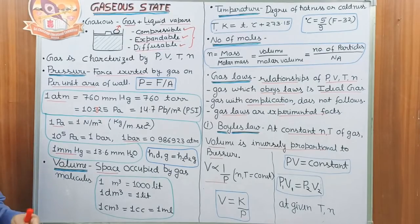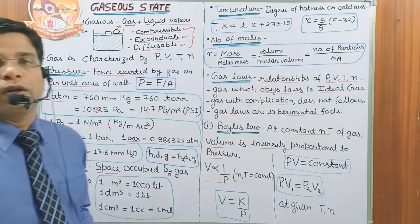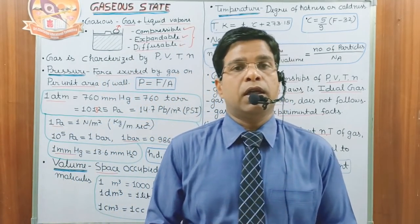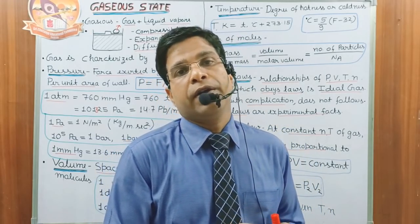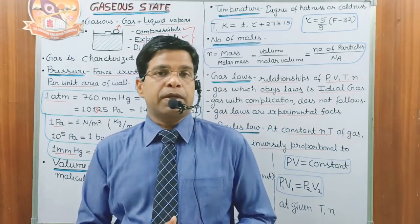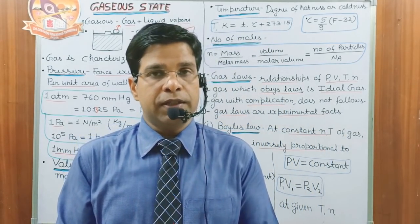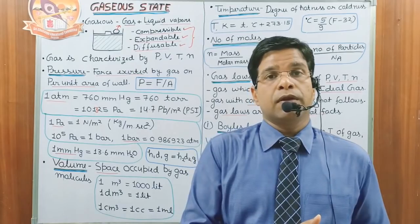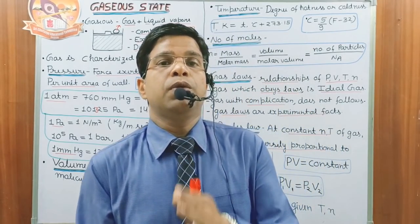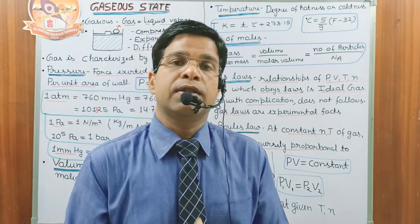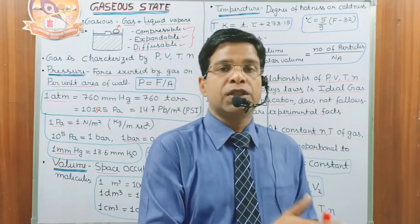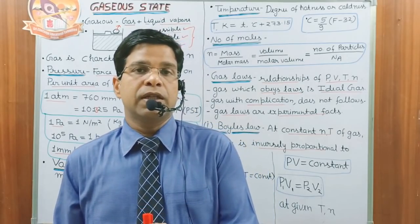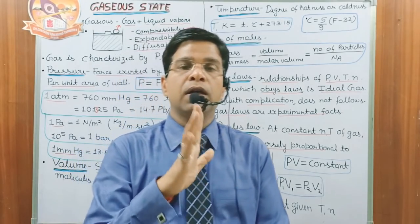1 bar is generally used for calculation and we can take it as approximately 1 atmosphere, but it is exactly equal to 0.98923 atmosphere. If we want to convert the height of mercury in terms of water, the conversion factor is: 1 mmHg height is equal to 13.6 mm height of water. If pressure is expressed in terms of a liquid with density d1 and height h1, and we want to calculate it for another liquid with height h2 and density d2, the formula is: h1·d1·g = h2·d2·g.